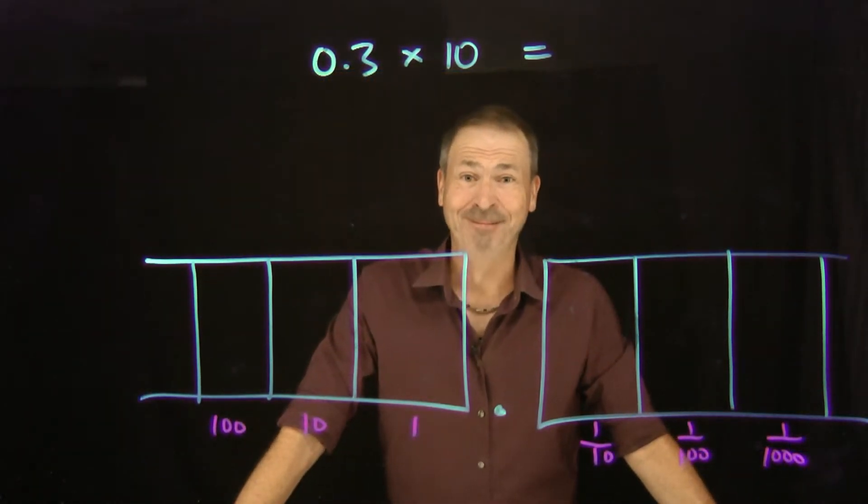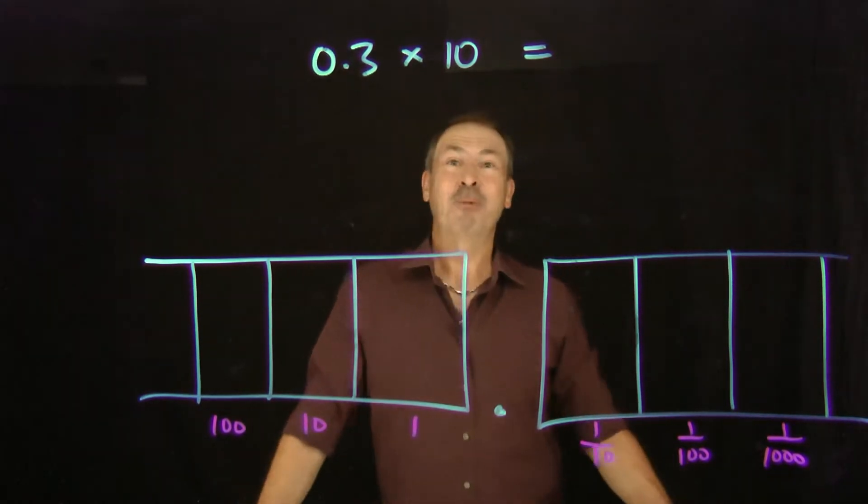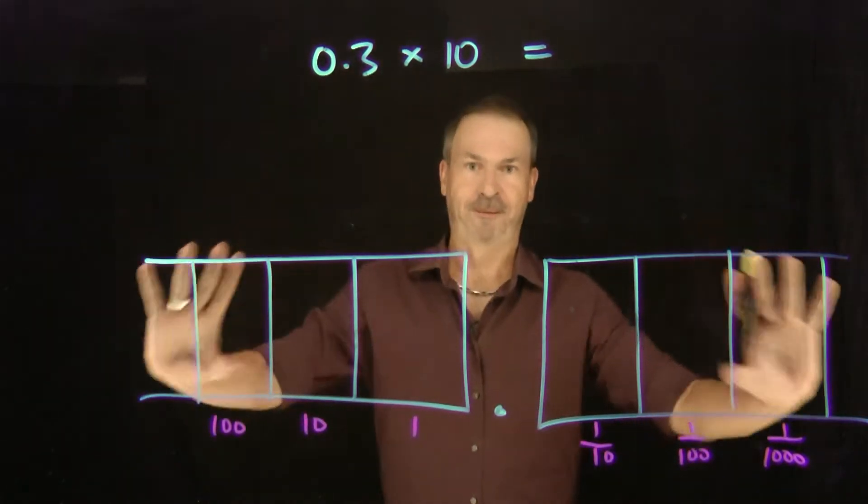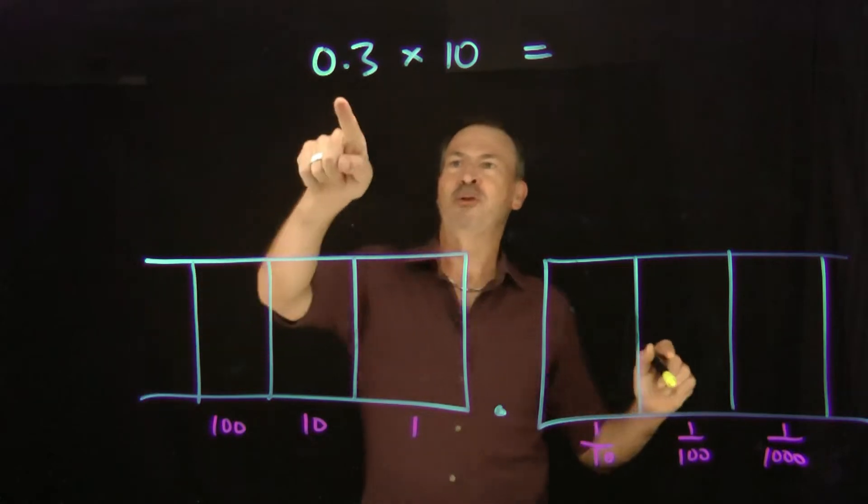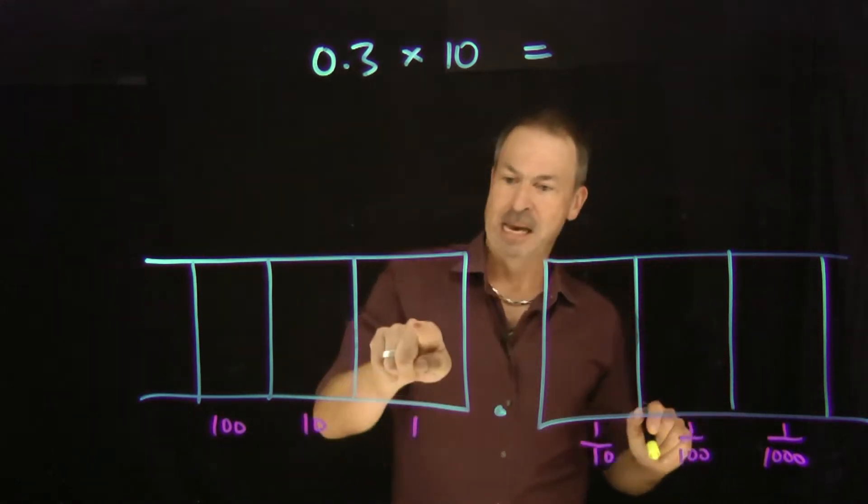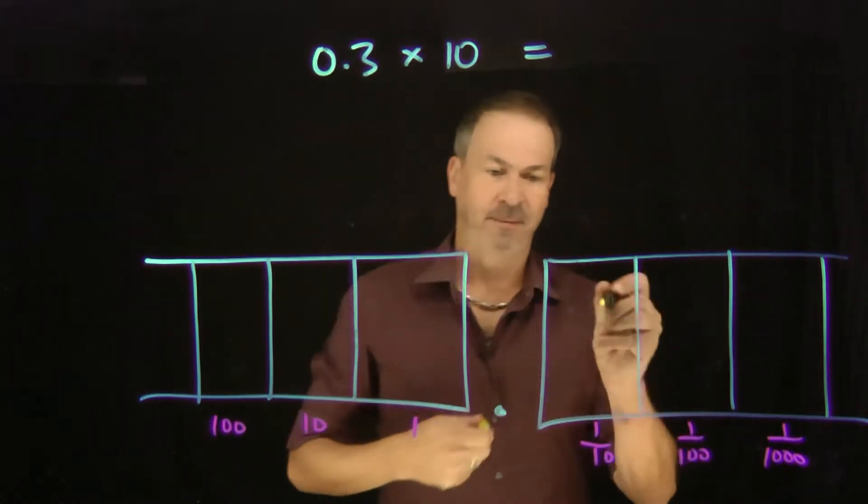What's 0.3 times 10? Well, I'm glad you asked! Alright, let's work this out. So here's a 10 in my machine with the full decimals displayed. Let me draw a picture of 0.3 first. None of those, and 3 of these. I'll just write the number 3.